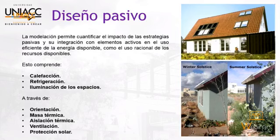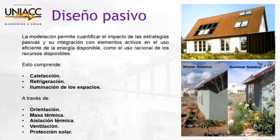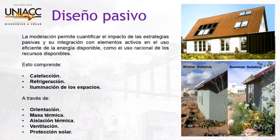Los elementos utilizados incluyen la orientación, para minimizar el riesgo de sobrecalentamiento; la masa térmica, para entender las características de conductividad térmica de los materiales y optimizar tanto la aislación, la calefacción y la refrigeración; la ventilación natural, para cumplir normativa de cambios de aire y minimizar el uso de refrigeración y calefacción; y la protección solar, para evitar riesgos de deslumbramiento y sobrecalentamiento por radiación directa.